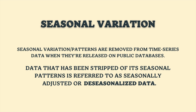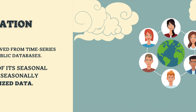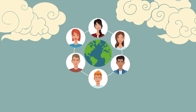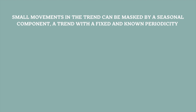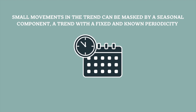In many cases, seasonal variation or patterns are removed from time series data when they are released on public databases. Data that has been stripped of its seasonal patterns is referred to as seasonally adjusted or de-seasonalized data. Economists and other practitioners are sometimes interested in extracting global trends and business cycles from time series free from the effect of known seasonality. Small movements in the trend can be matched by a seasonal component with a fixed and known periodicity, for example monthly or quarterly.